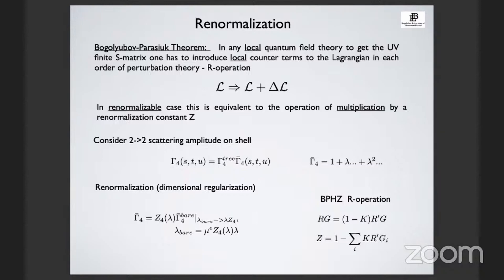In particular, I will consider two-by-two scattering amplitude. This scattering amplitude depends on kinematical variables, usually Mandelstam variables S, T, U. Then it's at some tree level, and there are radiative corrections—we have an expansion over the coupling. This expansion allows you to do renormalization order-by-order in perturbation theory and introduce subdivergences and all this machinery, which is well known in the renormalizable case but equally works in the non-renormalizable case.